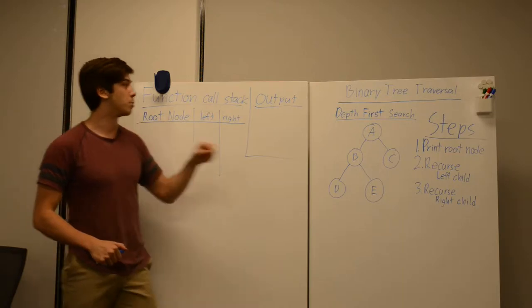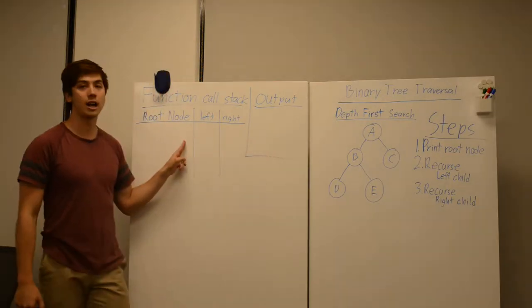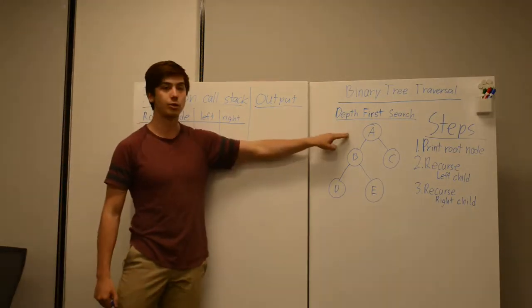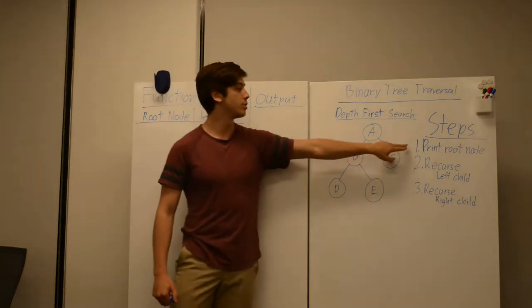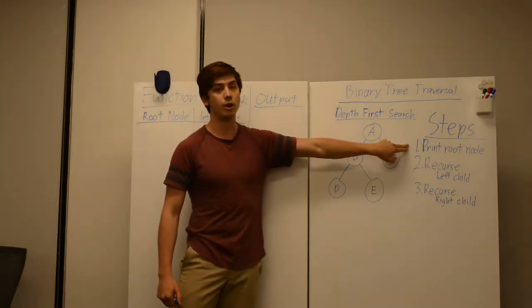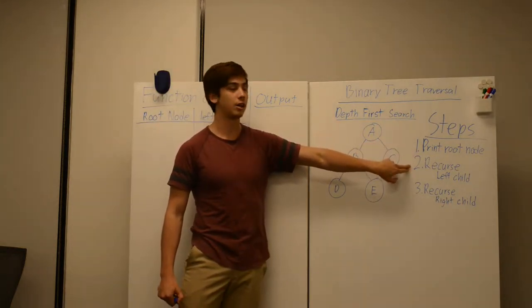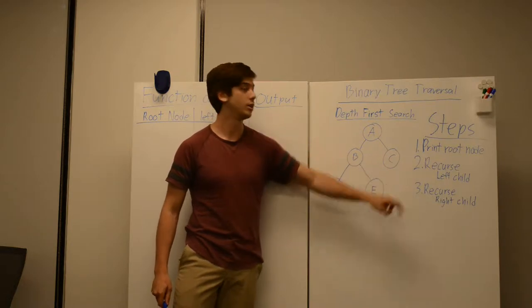So depth first search uses the function call stack to recursively traverse through the binary tree. The steps are as follows: print the root node, recurse to the left child, and then recurse to the right child.